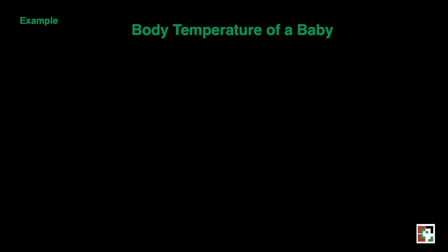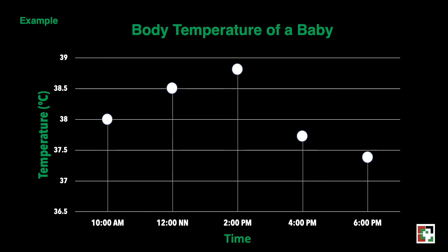To learn more about line graphs, we have here some examples. We have the body temperature of a baby. From the graph, we can see the changes of the body temperature of the baby over the period from 10 a.m. to 6 p.m. on a certain day. Based on the line graph, we can interpret the baby's body temperature over a period of 8 hours.